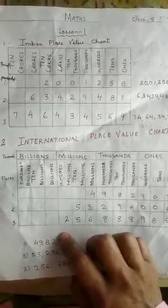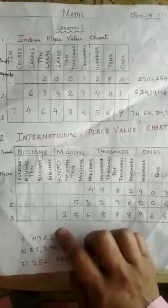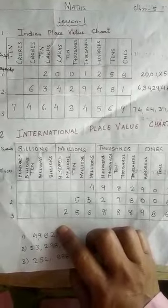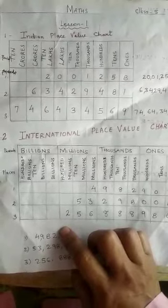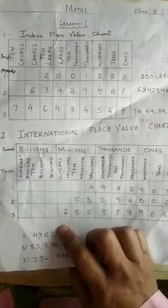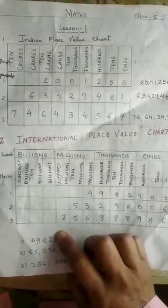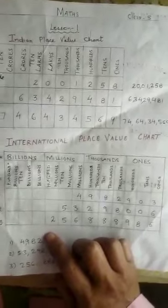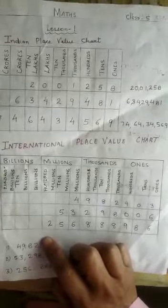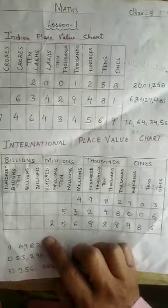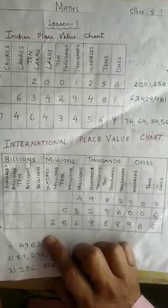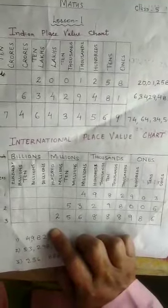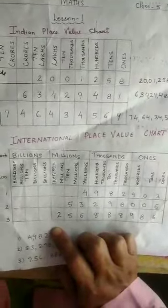Today I will teach you chapter number 1, that is 5 digit numbers. In this video I will cover a few points: first, Indian place value; second, international place value; face value; place value; and successor and predecessor.